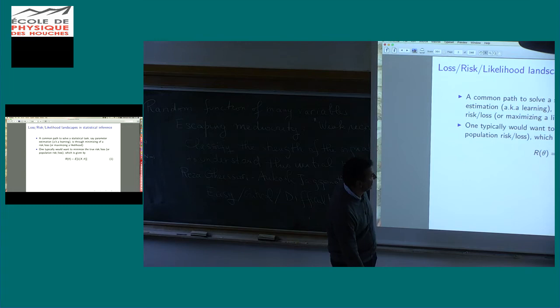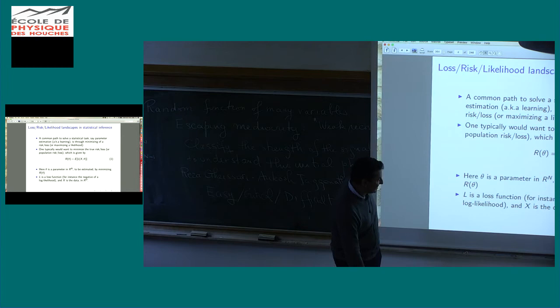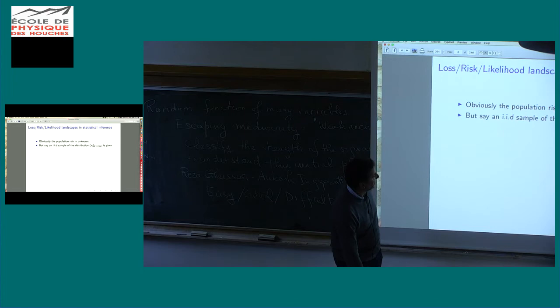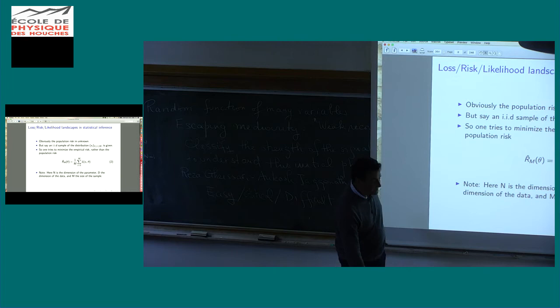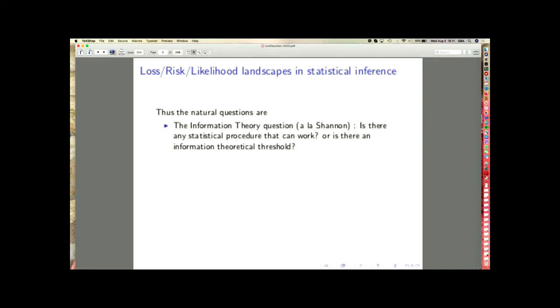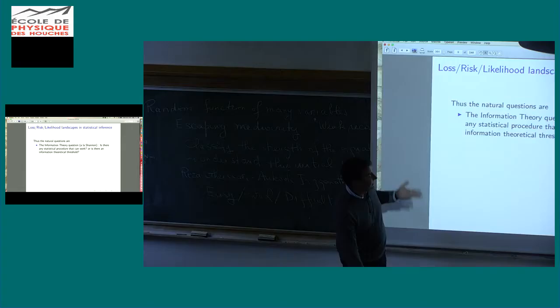So now I'm talking about a statistical task. Of course, estimating a parameter or learning is just minimizing a risk or loss. As I explained, we want to minimize such a loss. The data is d, the parameter is n, and the sample size will be m. So we have a sample of size m, and then we have the empirical risk.